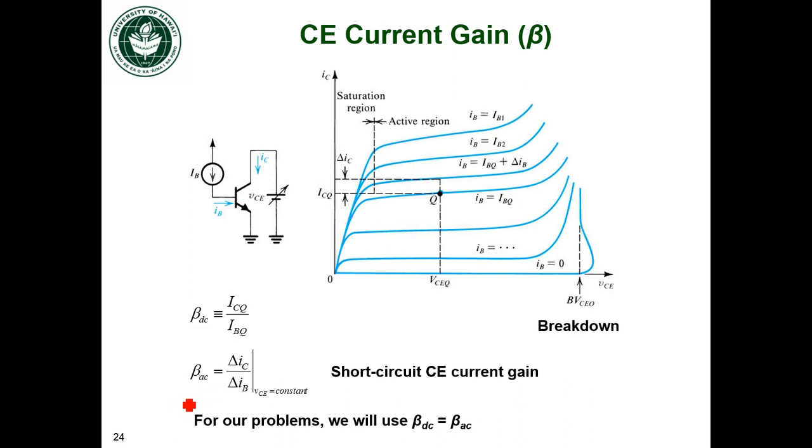We can also have an AC value of the beta term, which is just going to be the rate of change of the two when we add at some constant collector to emitter voltage. This is the short circuit collector to emitter current gain because we're taking the collector current and dividing by the base current. Although there could be a distinction between the two, for everything we're going to do in this class, we're going to say that there's no distinction. When we write beta, that just means it's equal to the DC and the AC definition of it.